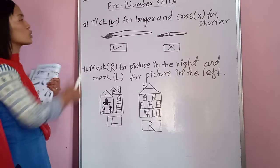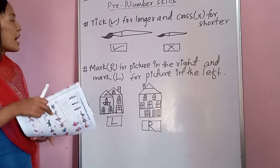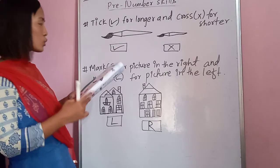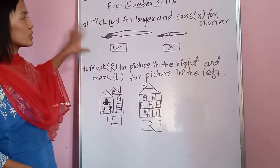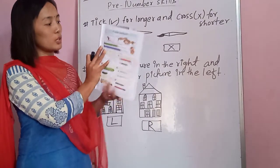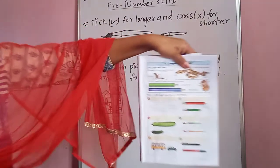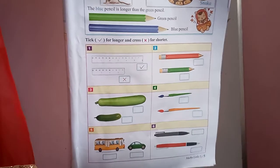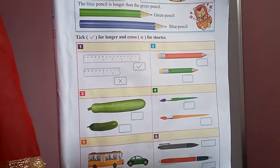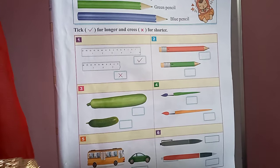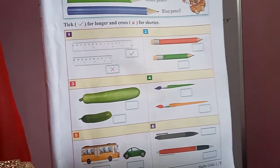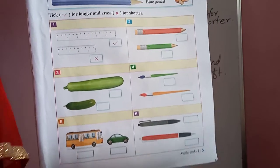This is the way to solve this type of question. There are lots of questions in your Class One book. I am going to show you the first question — one example is done for you already. For the longer picture there is a tick mark, and for the shorter one there is a cross mark. You have to follow that rule. This question is on page number six in your book.